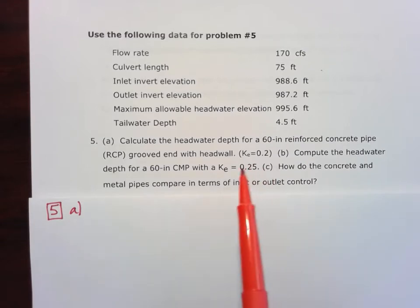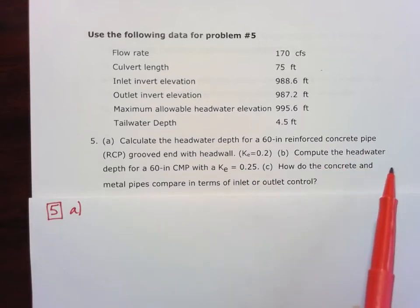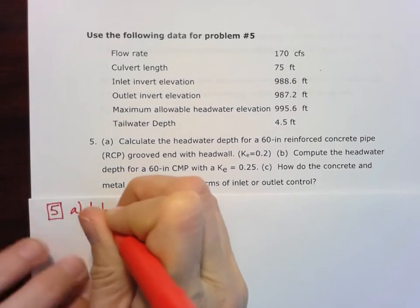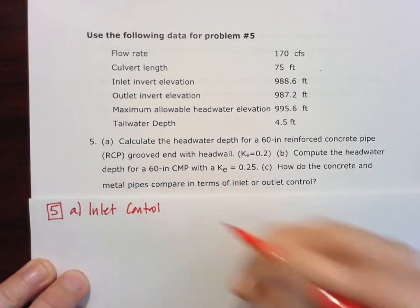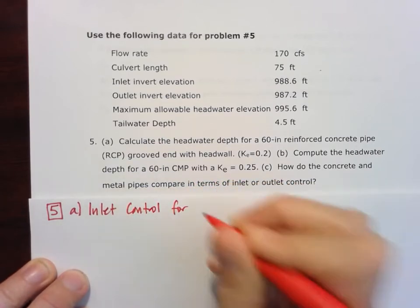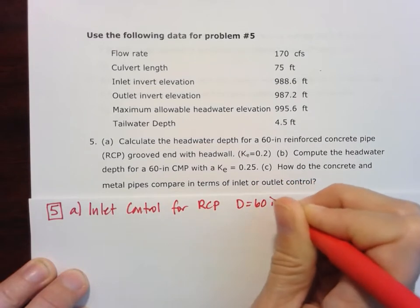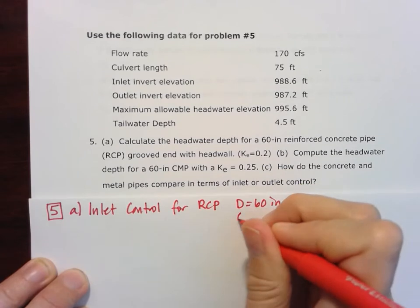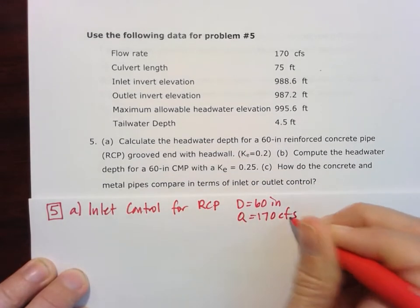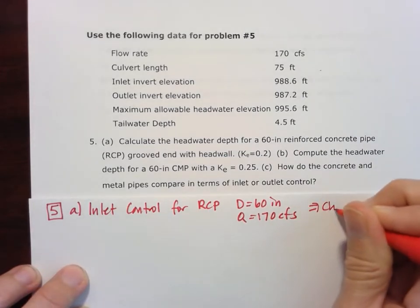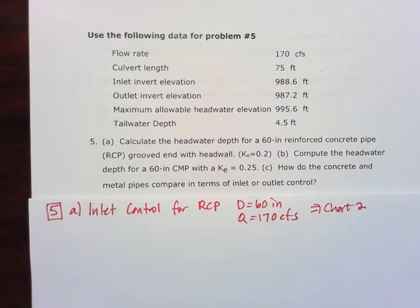So I'm going to start with part A, which is the reinforced concrete pipe, and I'm going to do my inlet control first. For inlet control for this RCP where the diameter is 60 inches and my flow rate is 170 cubic feet per second, that's all I need to know to go to chart two, which will tell me inlet control information for headwater for my concrete pipe culvert.